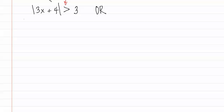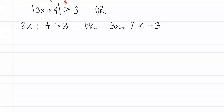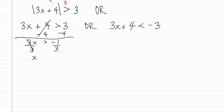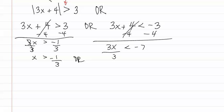Let's start setting it up. We first write it just as shown: 3x plus four is greater than three. Or, we write it again the same, but flip the sign to be less than negative three — we have changed the symbol and the sign on the number. Then we solve. Subtract four and we get 3x is greater than negative one. Divide by three and we get x is greater than negative one-third. Or, solving the second: 3x is less than negative seven. Divide each side by three and we get x is less than negative seven-thirds.